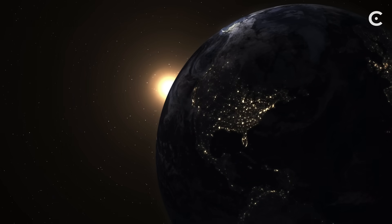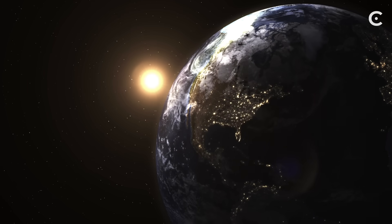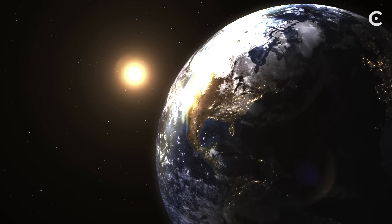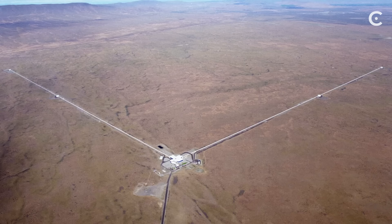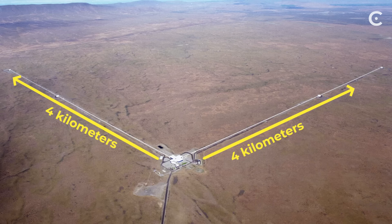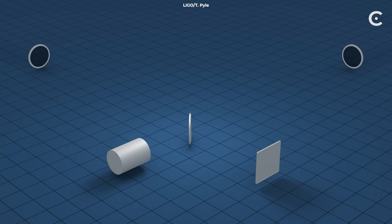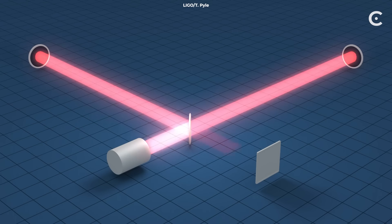To put that in perspective, if the distance between Earth and the Sun changed by the width of a human hair, LIGO could detect it. Two massive L-shaped detectors, each with arms four kilometers long, use laser interferometry to measure tiny changes in distance. When a gravitational wave passes through, one arm gets slightly longer while the other gets slightly shorter, and this creates a detectable interference pattern in the laser light.